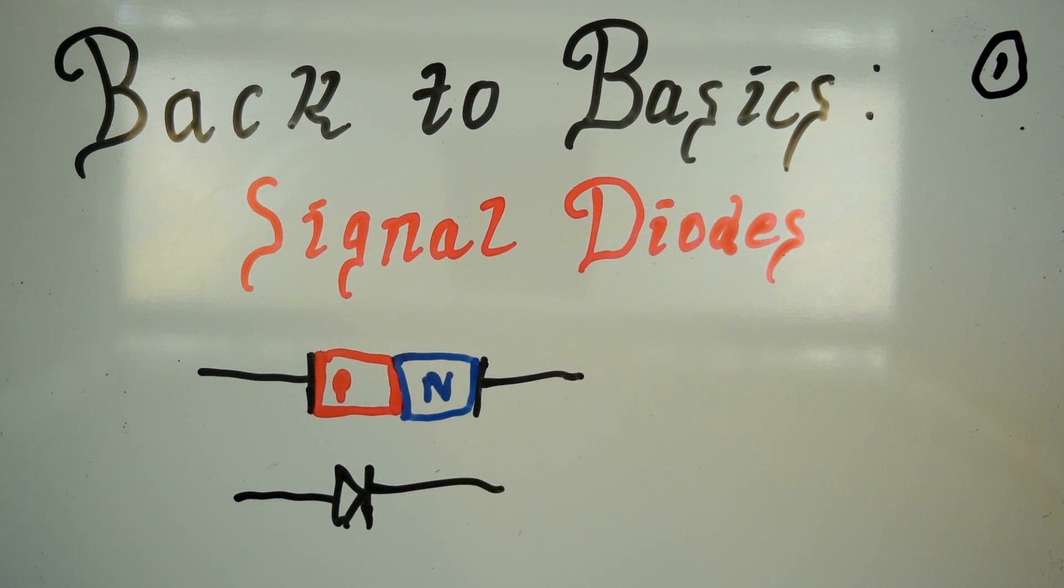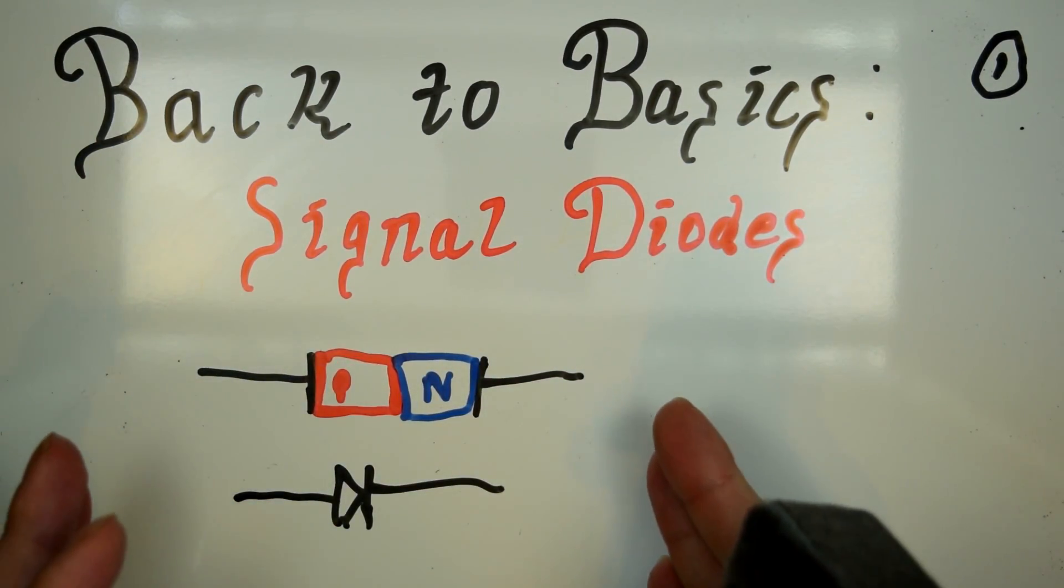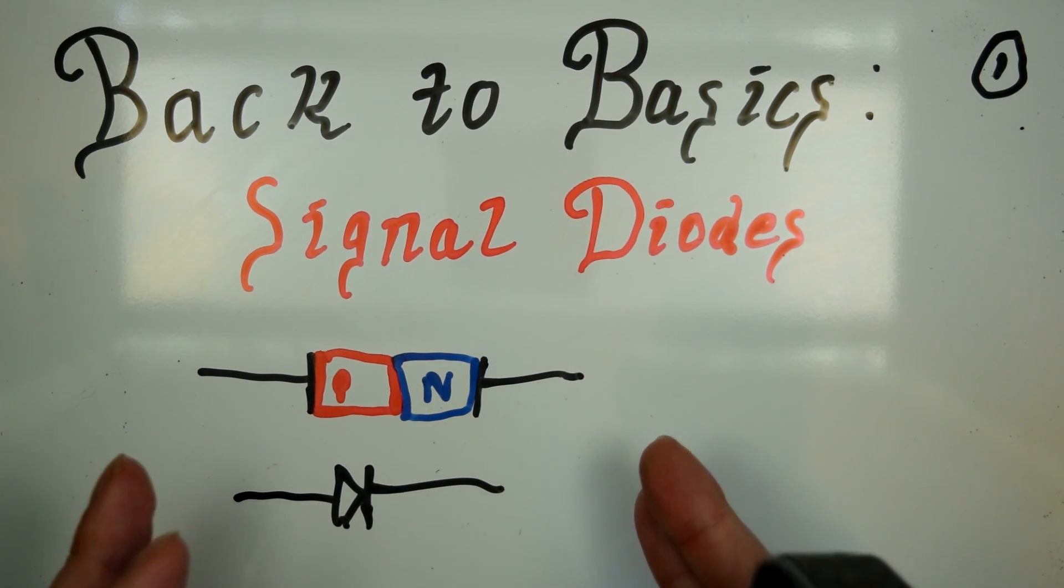Anyway, so that's what a standard diode looks like. For your general purposes of we want current flowing this way and not this way, your standard power diode is going to do just fine.